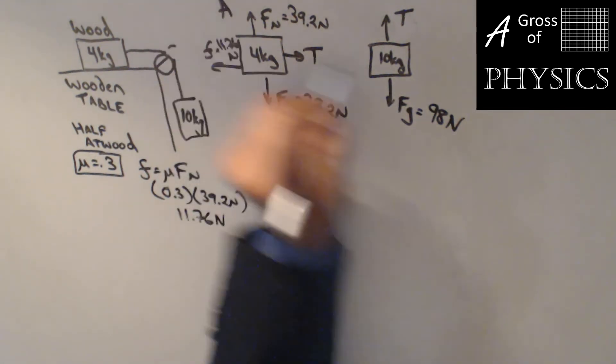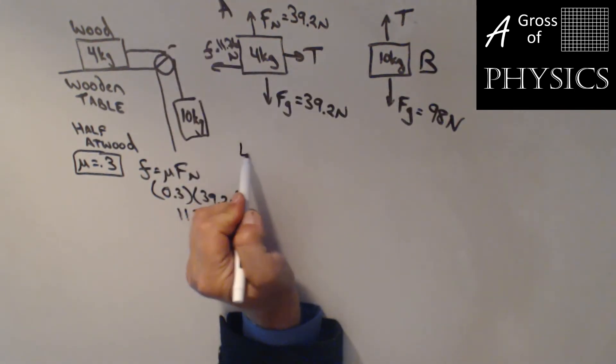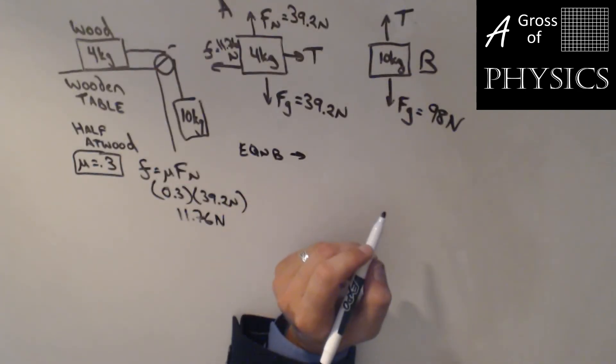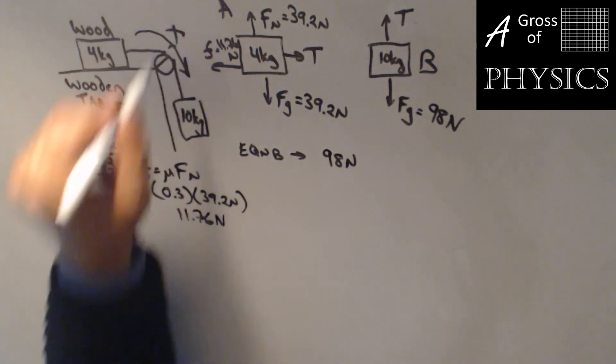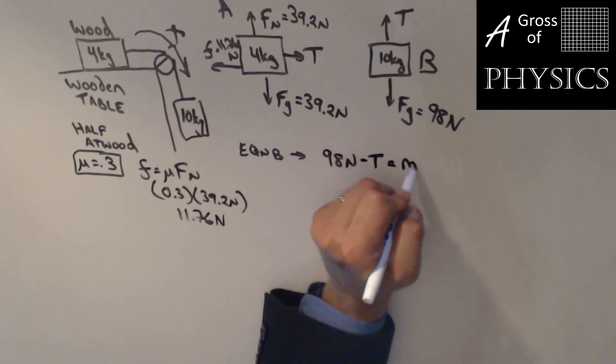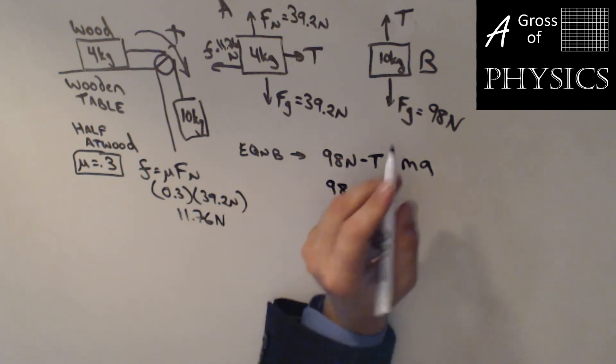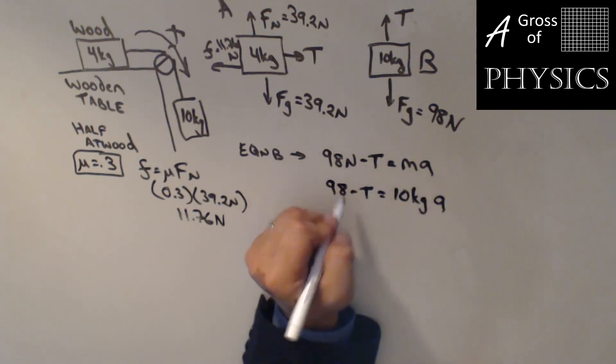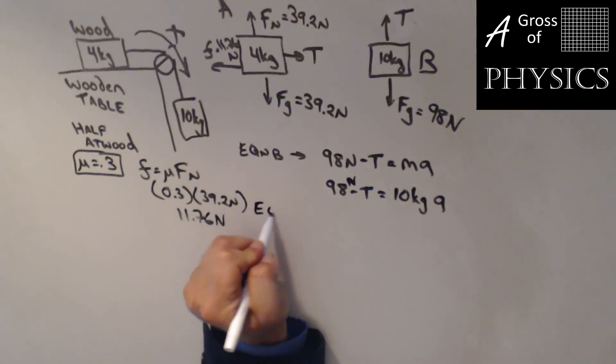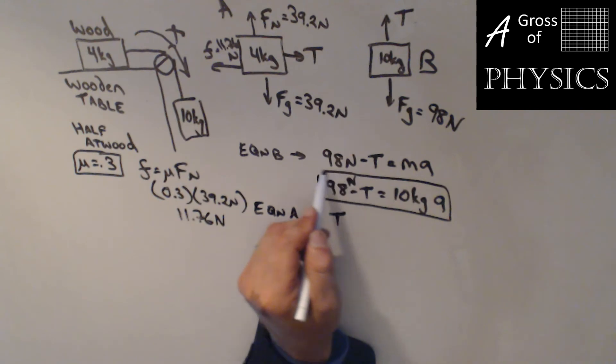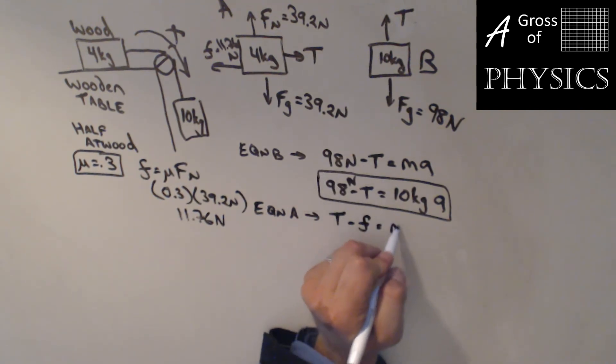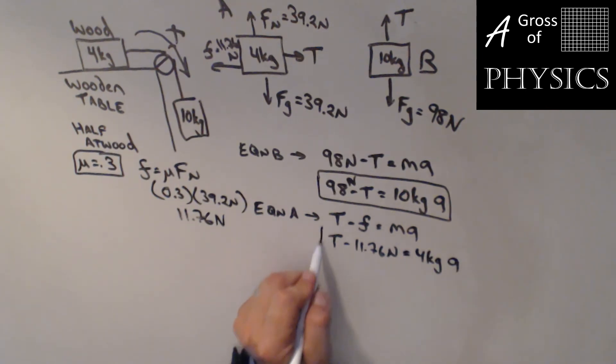We have two blocks, we'll call them A and B again. I'll start with equation B first because it has less forces. We have 98 N moving downward, which is our positive direction. We'll define the problem as moving clockwise as positive. 98 - T = MA, so 98 - T = 10 kg × A. Equation A is T moving to the right in the direction of motion. T - friction = MA, so T - 11.76 N = 4 kg × A. We have our two equations.